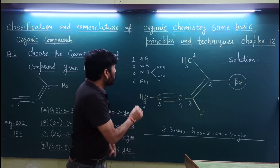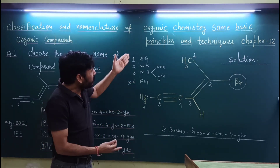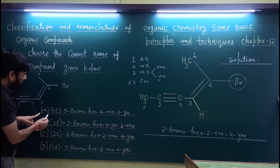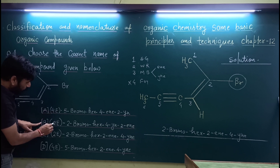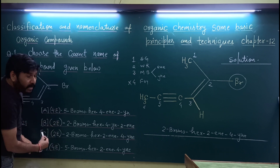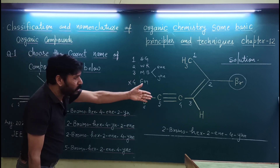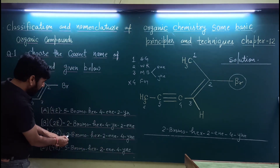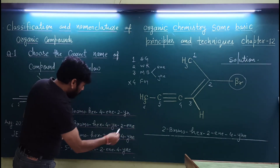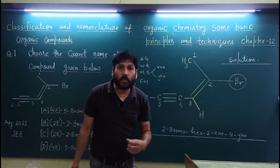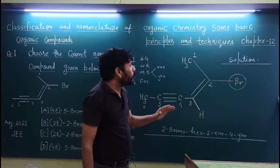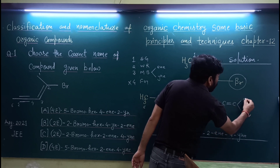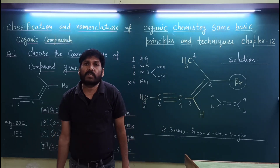इसमें functional group नहीं है, तो वो point छोड़ देते हैं। लेकिन जो चार options दिये हैं उनमें 2E और 4E जैसी extra चीज़ें जोड़ी गई हैं। यह geometrical isomerism से related है। Geometrical isomerism तब होती है जब doubly bonded carbon से दो different groups attach हों — पहले carbon पर भी दो different groups और दूसरे carbon पर भी दो different groups।